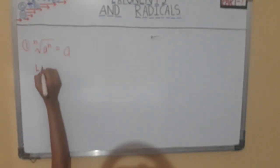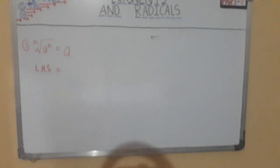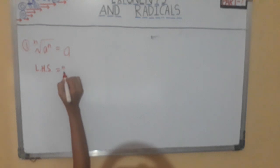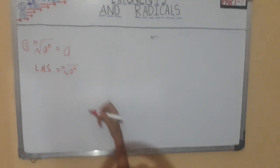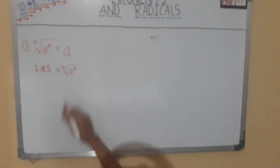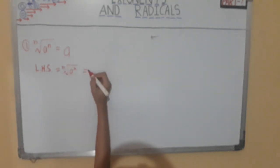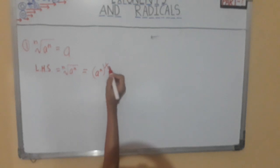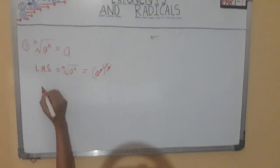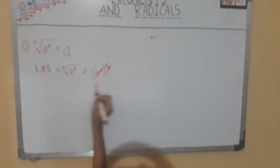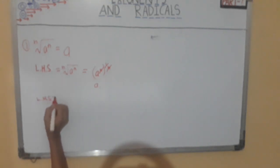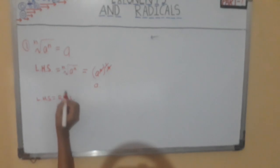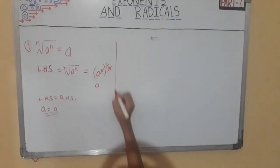This is equal to a. Let's prove it. Taking the left-hand side: n-root of a raised to n. We know that n-root of a equals a raised to 1 by n. So this becomes a raised to 1 by n, whole raised to n. The n in the exponent and the n in the denominator cancel due to multiplication, so we are left with a. Therefore, LHS equals RHS, and the value of n-root of a raised to n is equal to a.